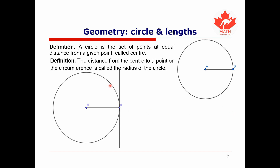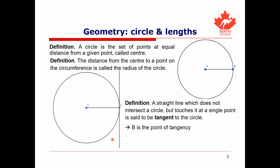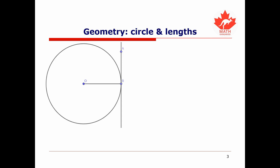Now let's have a look at this diagram. We have a circle and a line which meets the circle at a single point, namely the point B. This type of line is called tangent to the circle. A straight line which does not intersect a circle but touches it at a single point is said to be tangent to the circle, and we call the point B the point of tangency. The angle between the center, the point of tangency, and any point along the tangent line is a 90 degree angle.